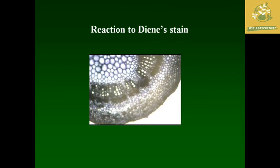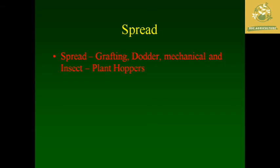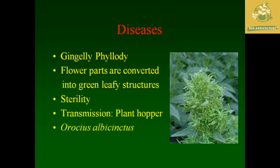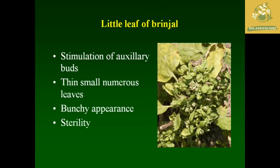Phytoplasma are spread through grafting, dodder, and mechanical injuries. In insects they are transmitted by plant hoppers. The disease 'green ear' (fyllody) causes flowers to be converted into green leafy structures, making the plant sterile; main transmission is through plant hoppers, for example Orosius albicintus. Little leaf of brinjal causes stimulation of axillary buds, forming thin small narrow leaves in the economic part, showing a bunchy appearance and making plants sterile.